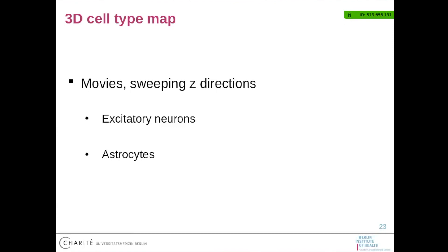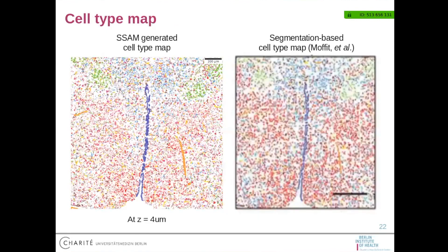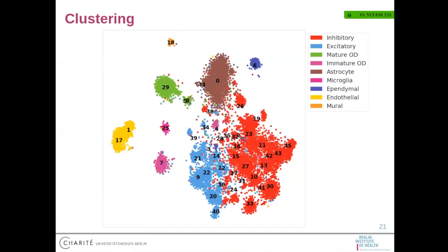To explain this once more: after clustering the selected vectors and calculating the cluster centroid, we can calculate the correlation between each cluster centroid and every pixel in the vector field. So we can color every pixel based on its correlation to each cluster centroid.